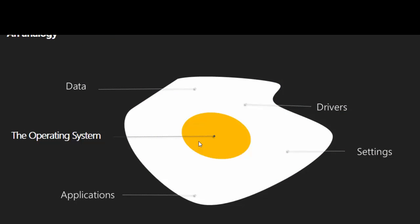The upgrade process has been refined over the last few years. Think of it like an egg: the operating system sits in the middle, and around it we have the data, drivers, settings, and applications. We can remove the yolk while leaving other things in place — swap the yolk out if needed. This is one of the nice things about Windows becoming much more componentized, keeping user settings versus operating system files separate from each other, giving us a much smoother upgrade path.